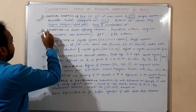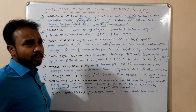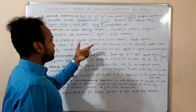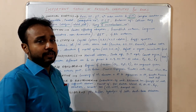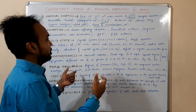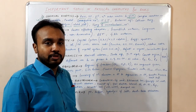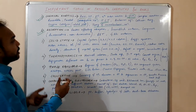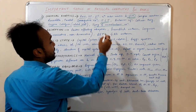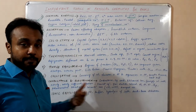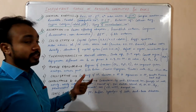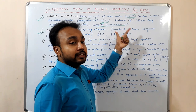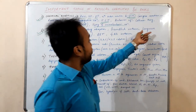Next comes adsorption. This is one of the important chapters, but not so many marks come from it. Still, you have to read it — it is a very easy chapter and will take hardly two to three hours. In this chapter, what you have to read are the factors affecting adsorption, like temperature, pressure, and nature of the adsorbent. Then you have to study the Freundlich isotherm and then the Langmuir isotherm.